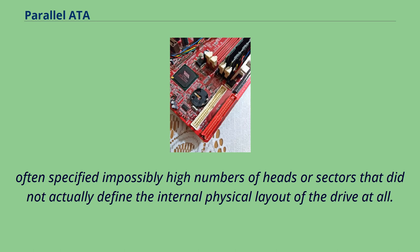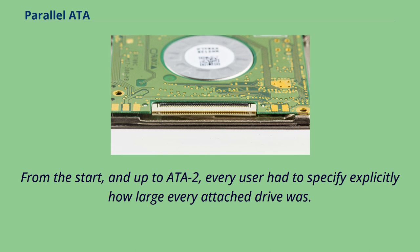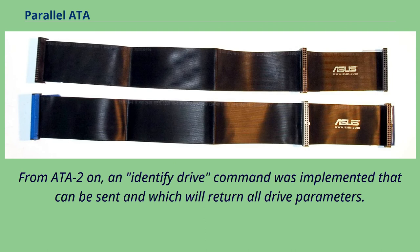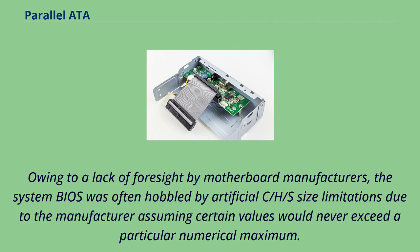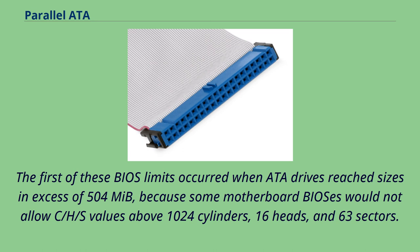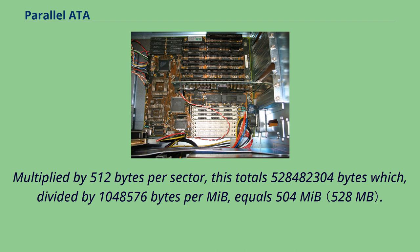From the start and up to ATA-2, every user had to specify explicitly how large every attached drive was. From ATA-2 on, an IDENTIFY DRIVE command was implemented that can be sent and which will return all drive parameters. Owing to a lack of foresight by motherboard manufacturers, the system BIOS was often hobbled by artificial C/H/S size limitations. The first of these BIOS limits occurred when ATA drives reached sizes in excess of 504 MiB, because some motherboard BIOSes would not allow C/H/S values above 1024 cylinders, 16 heads, and 63 sectors. Multiplied by 512 bytes per sector, this totals 528,482,304 bytes which, divided by 1,048,576 bytes per megabyte, equals 504 MiB.